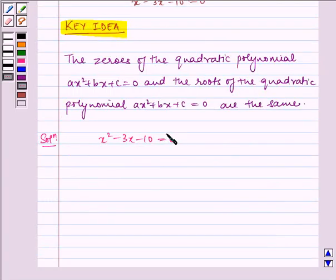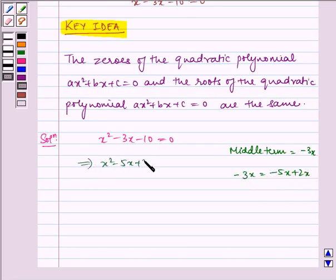Now to factorize, we shall use the method of splitting the middle term. Here the middle term is minus 3x, which can be written as minus 5x plus 2x. So we get x squared minus 5x plus 2x minus 10 equals 0.